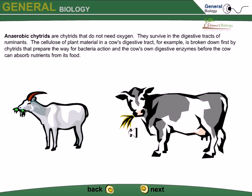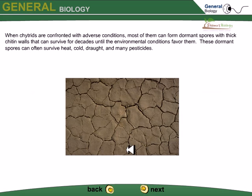Chytrids can also digest materials covered with chitin, which we humans cannot digest because we are not ruminant animals. However, if we study and utilize the mechanism and digestive properties of chytrids, we could design something to help us digest cellulose. If we can digest cellulose, it would be a great advantage because our food sources would be significantly expanded.